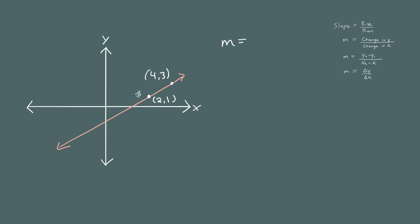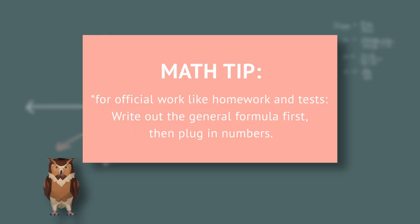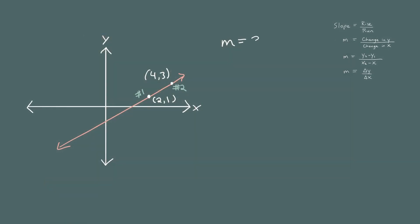Let's call (2, 1) point 1 and (4, 3) point 2. To compute the slope, we take the y coordinate of point 2, which is 3, and subtract the y coordinate of point 1, which is 1. For the run, we take the x coordinate of point 2, which is 4, and subtract the x coordinate of point 1, which is 2. That gives us 2 divided by 2, or simply 1. The slope of this line is 1, which is positive — good, because the line goes upward as you move from left to right.